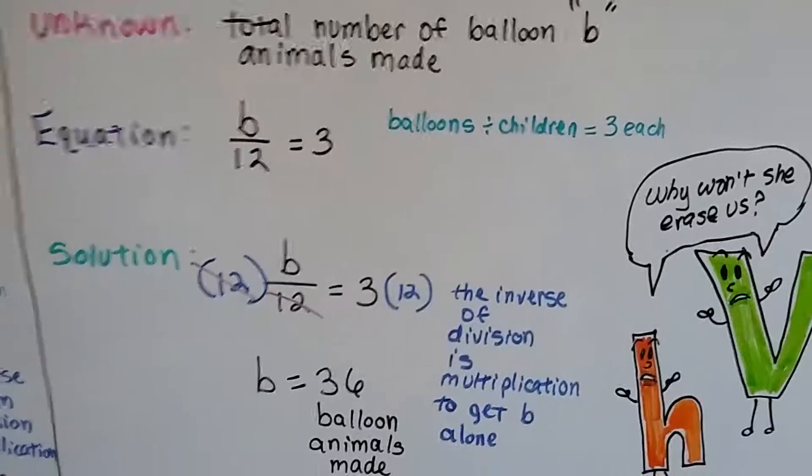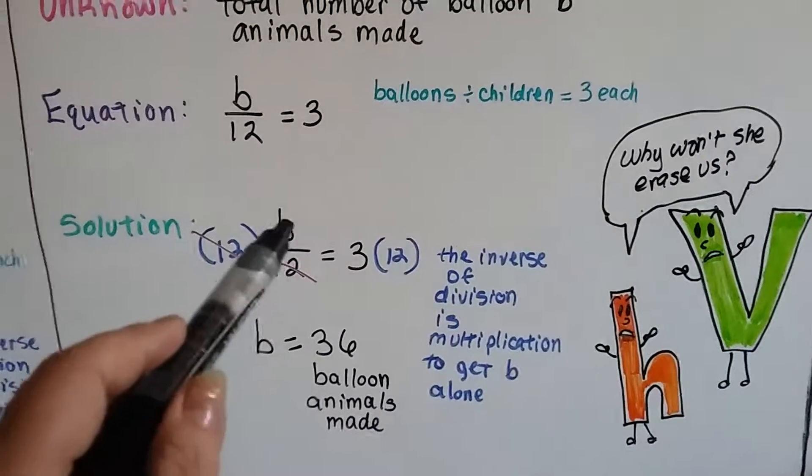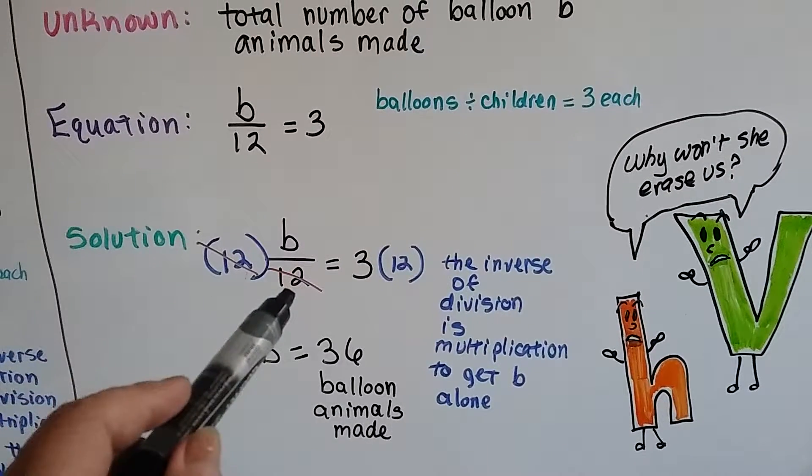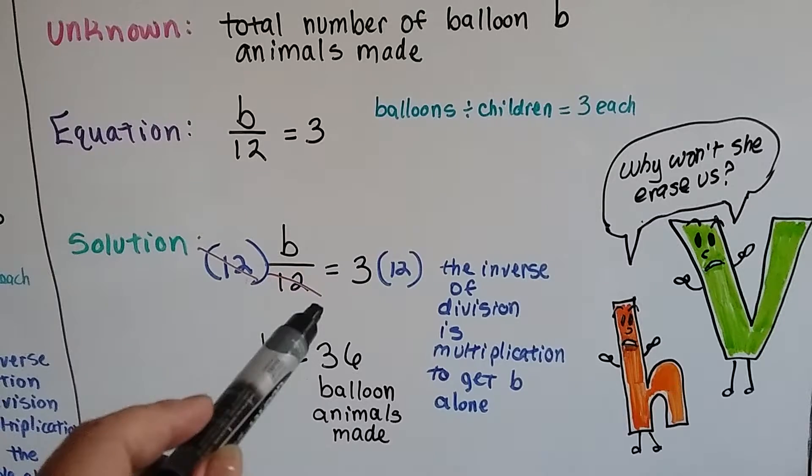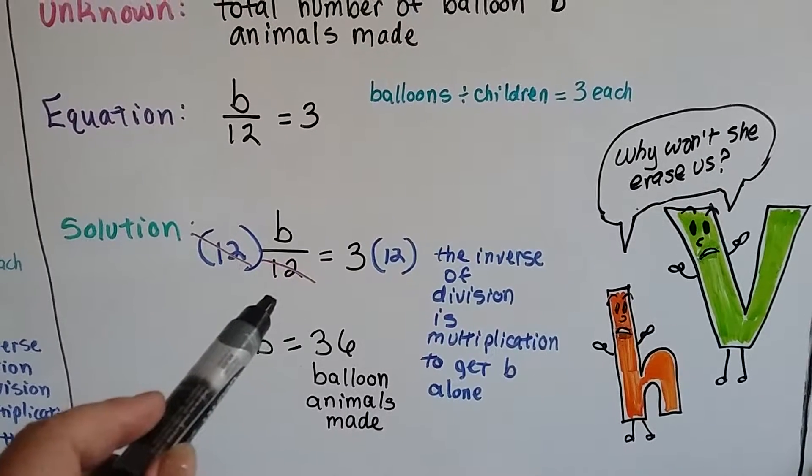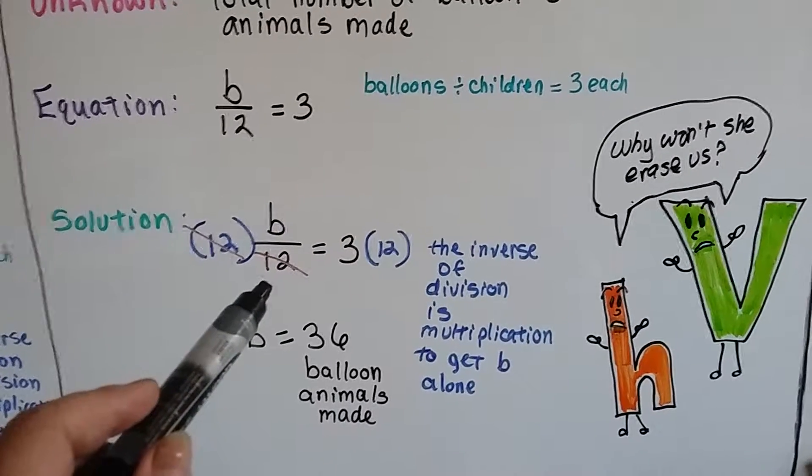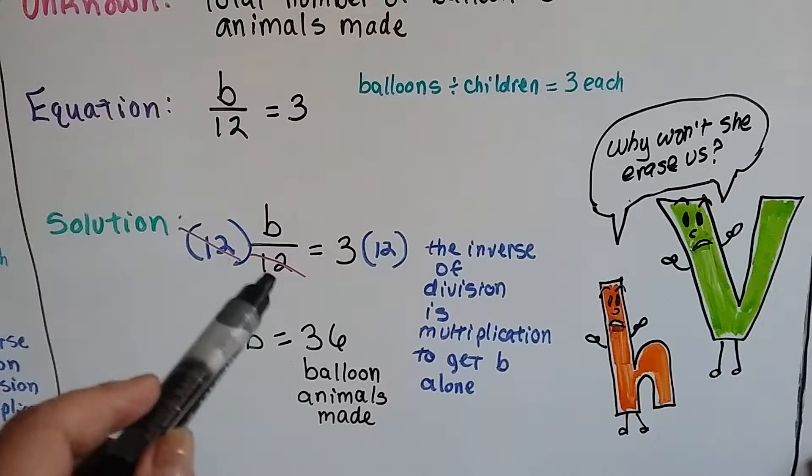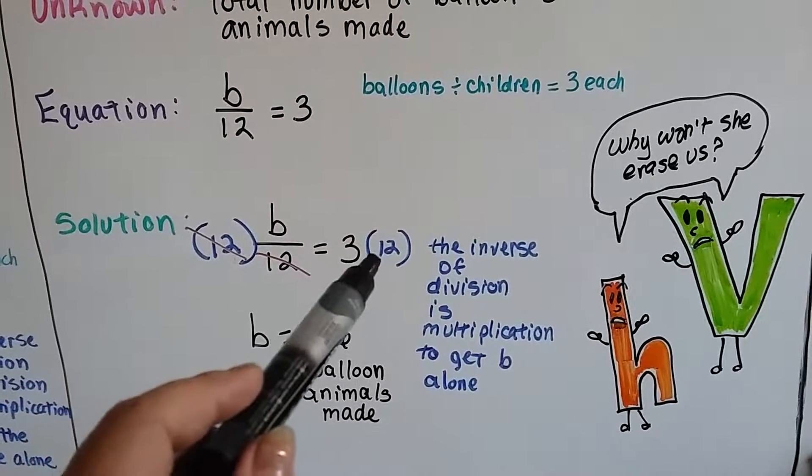So here's our solution. We've got the b over 12, which means b divided by 12, and it equals 3. So the inverse of division is multiplication. To get that b alone, we need to get rid of this 12. So we're going to divide by 12 on each side.